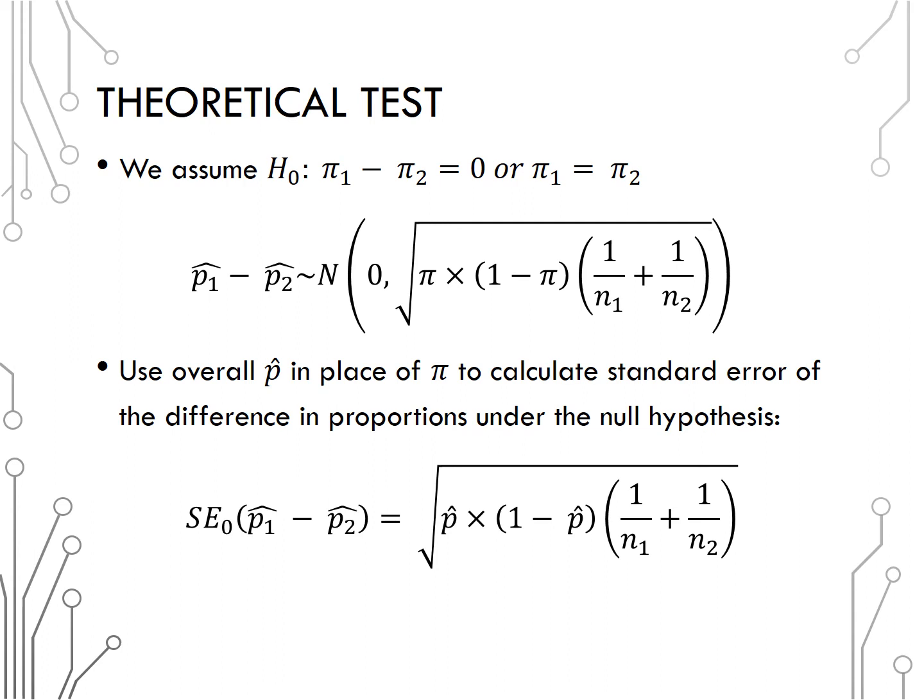Be careful with parentheses, and I would recommend in your calculator doing 1 over n1 plus 1 over n2, then multiply that by p hat, then multiply that by 1 minus p hat, then take the square root at the end. So your standard error under the null hypothesis of the difference in sample proportions is the square root of p hat times 1 minus p hat times 1 over n1 plus 1 over n2.